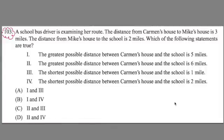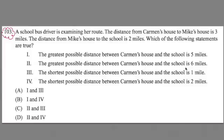A really good number sense and operation problem. It goes like this: A school bus driver is examining her route. The distance from Carmen's house to Mike's house is 3 miles. The distance from Mike's house to the school is 2 miles. Which of the following statements are true? Statement 1: The greatest possible distance between Carmen's house and the school is 5 miles. Statement 2: The greatest possible distance is 6 miles. Statement 3: The shortest possible distance from Carmen's house to the school is 1 mile. Statement 4: The shortest possible distance is 2 miles. Read it to yourself, and then we'll talk about how to solve it.